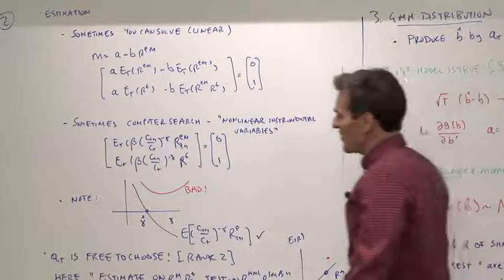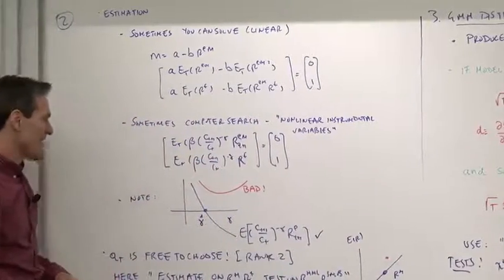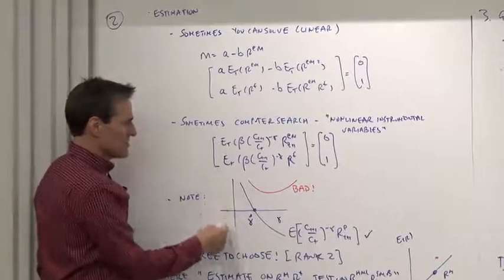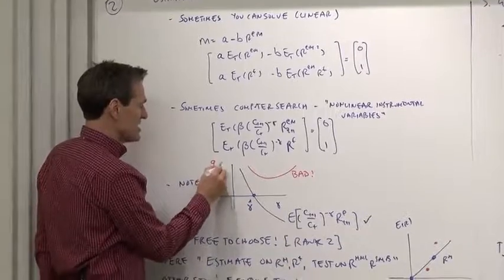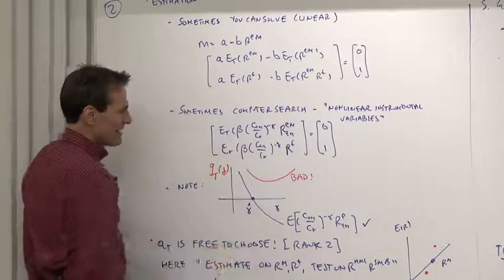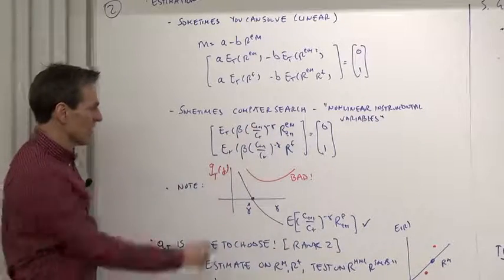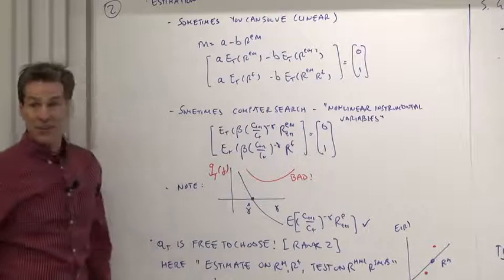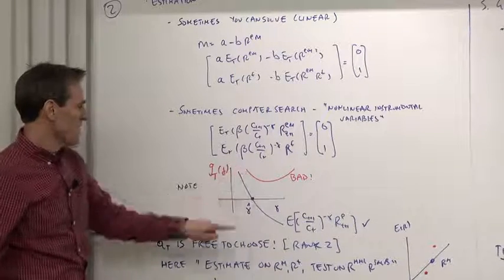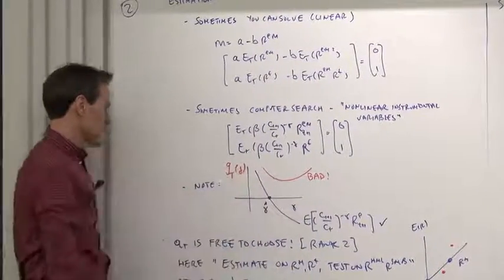That can run into trouble, and this is an important case that happens sometimes. Here I've graphed gamma, the parameter we're looking for, versus the moment. This is the GT of gamma that we're trying to minimize. We want to choose gamma to set that first moment to zero. If it happens that there is no solution, you're in trouble. The model has to work in some sense for this to work.